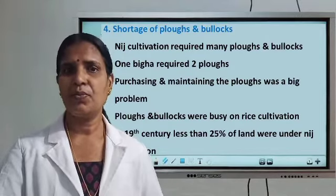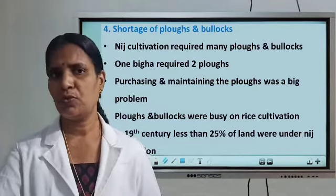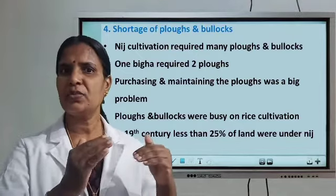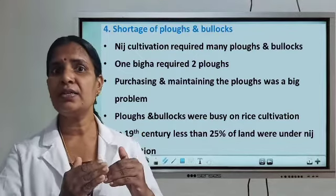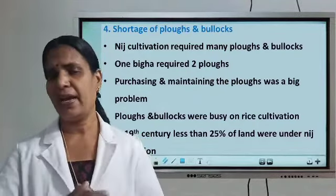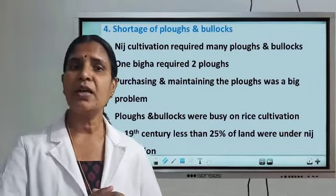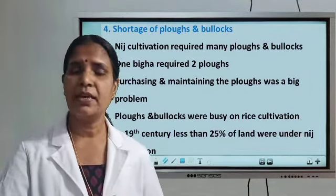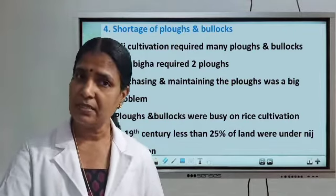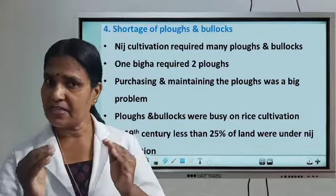For cultivating one bigam of land, they needed two plows. Bigam in Bengal was considered one third of an acre. So planters who had one thousand bigams needed two thousand plows. That many plows they could not get because the bullocks and plows were also engaged in rice cultivation.